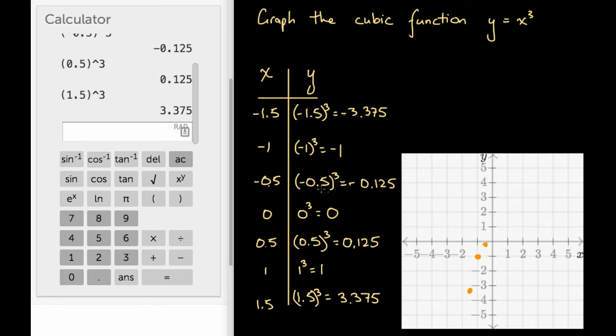The next point we've got is 0 and 0. That's going to be the origin. That's going to be this point here. Next one, we've got 0.5 and 0.125. This is going to be 0.5 units right of the origin and 0.1 units up. It's going to be about there.